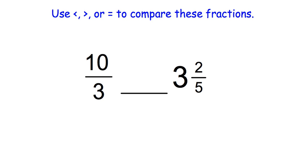For this problem, we are comparing an improper fraction to a mixed number. The best way to do this is to turn that mixed number into an improper fraction. So we're going to do that. We're going to use our triangle trick.